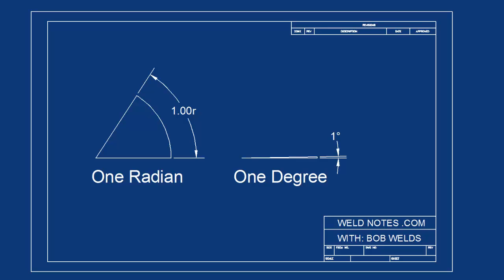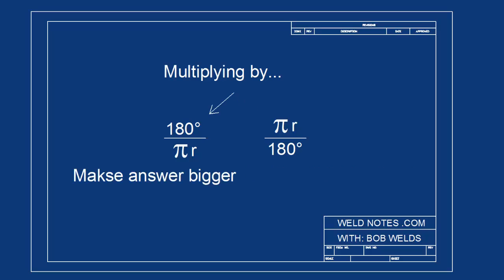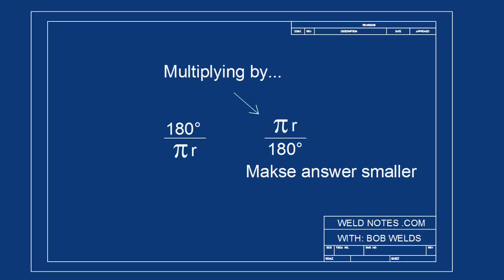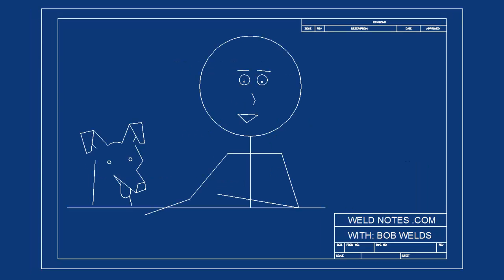You might notice that radians are a lot bigger than degrees, so you use fewer of them than you would degrees. And that's another way you can help keep track of whether to multiply by pi over 180 or 180 over pi. Well, that's about all the time we have for today. I'm Bob Welds, and these are Weld Notes.